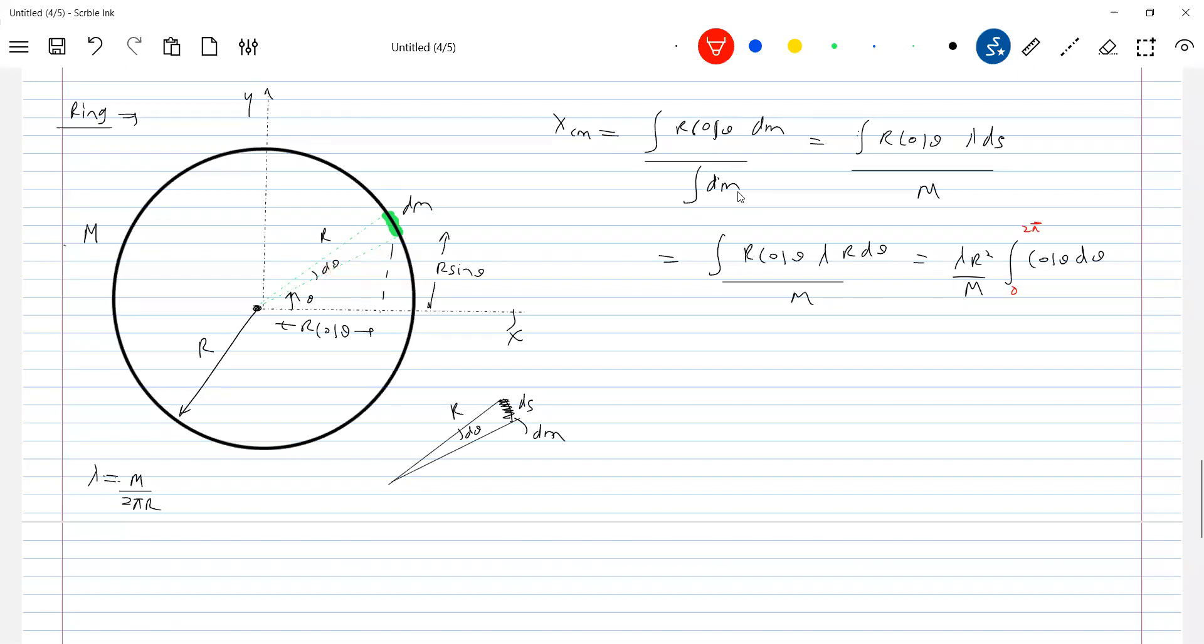So that m, m I took outside. The denominator it will be there like this only. So what is the value of this x_cm now? x_cm will be lambda r square by m integral of cos θ sin θ 0 to 2 pi. This will be 0. So where the center of mass, x coordinate of center of mass of the ring.